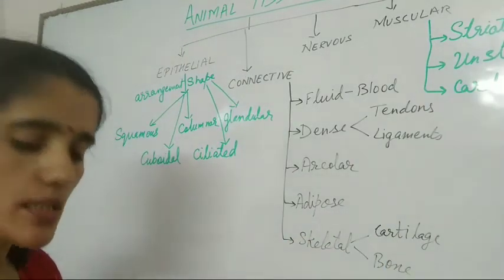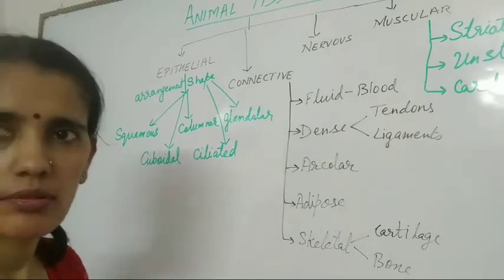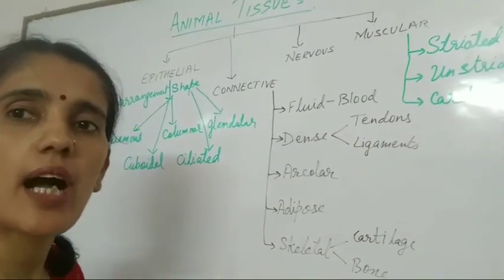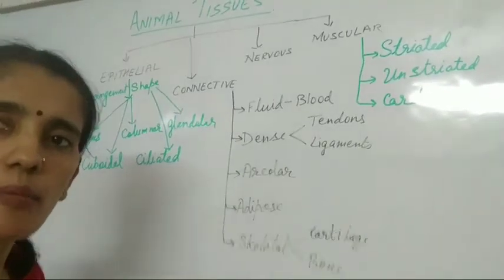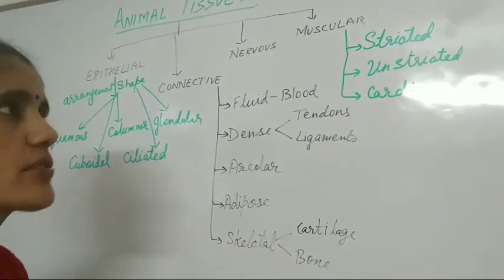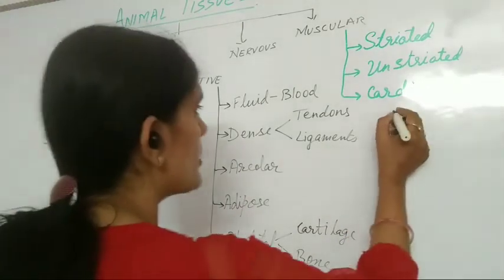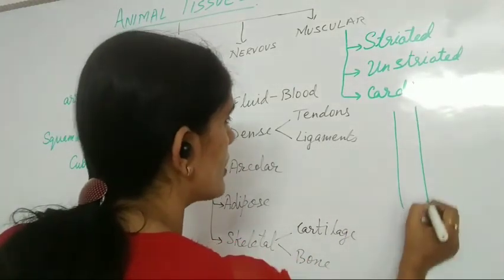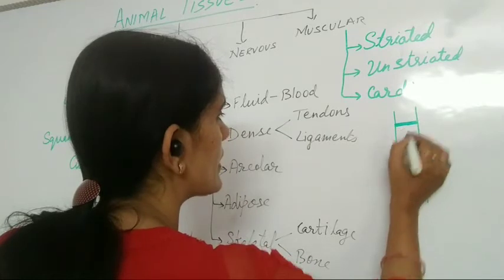Striated tissue has light and dark color bands present. Unstriated tissue — in striated tissue, light and dark color bands are present. In the next session I am going to show you so you can observe the different types.